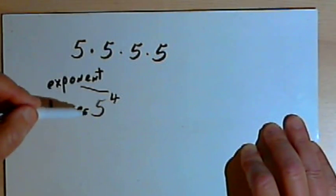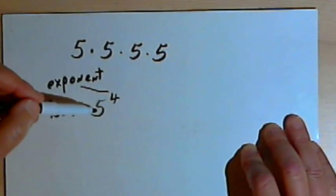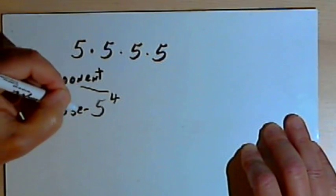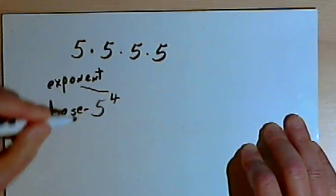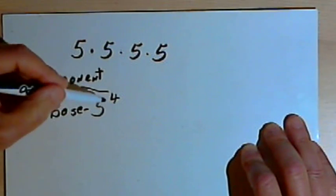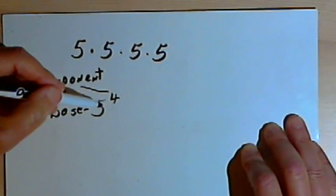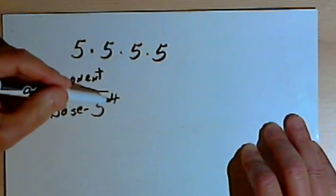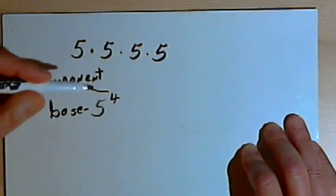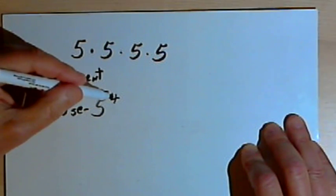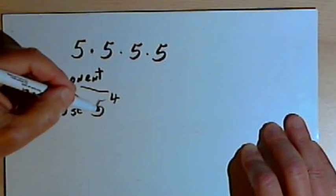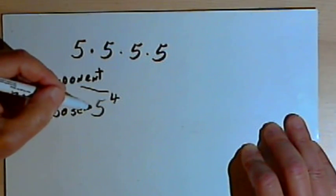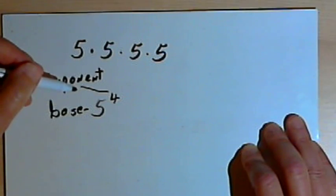Let's talk about how you're going to say this. Formally, with a base of 5 and an exponent of 4, you would say "5 raised to the 4th power." But most people don't say that much — they may say "5 raised to the 4th," or "5 to the 4th power," or just "5 to the 4th." All of those mean the same thing.